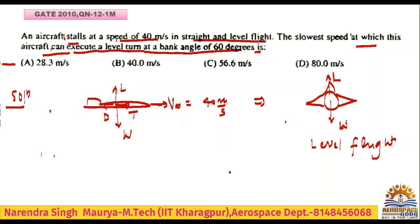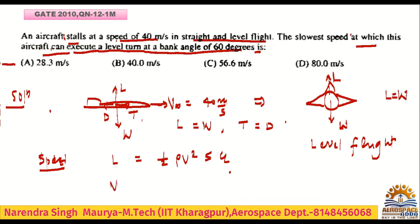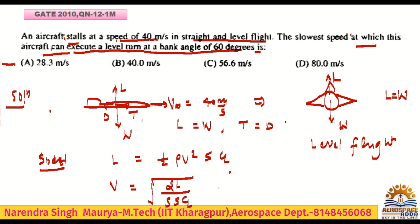For steady level flight, L equals half rho V squared S times CL. The condition is L equals W, so the speed is V equals sqrt(2W divided by rho S CL). This is equation number 1.